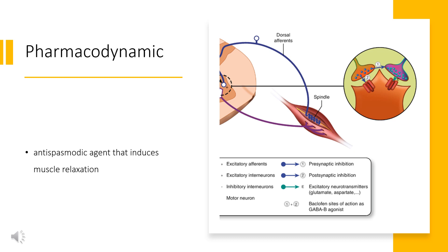Pharmacodynamics: Baclofen is an antispasmodic agent that induces muscle relaxation. It reduces the release of excitatory neurotransmitters in the presynaptic neurons and stimulates inhibitory neuronal signals in the postsynaptic neurons. Intrathecal formulations of Baclofen are more effective than the oral formulation in relieving spasticity directly at the level of the spinal cord. Baclofen has CNS depression properties and can cause sedation with tolerance, somnolence, ataxia, and respiratory and cardiovascular depression.